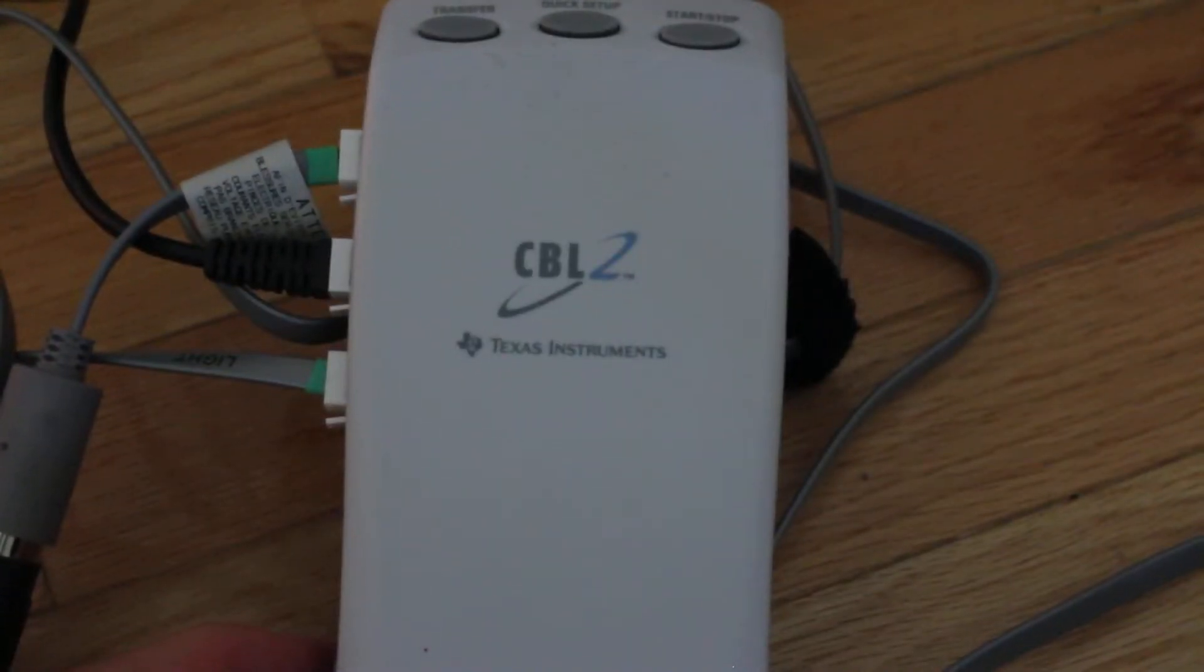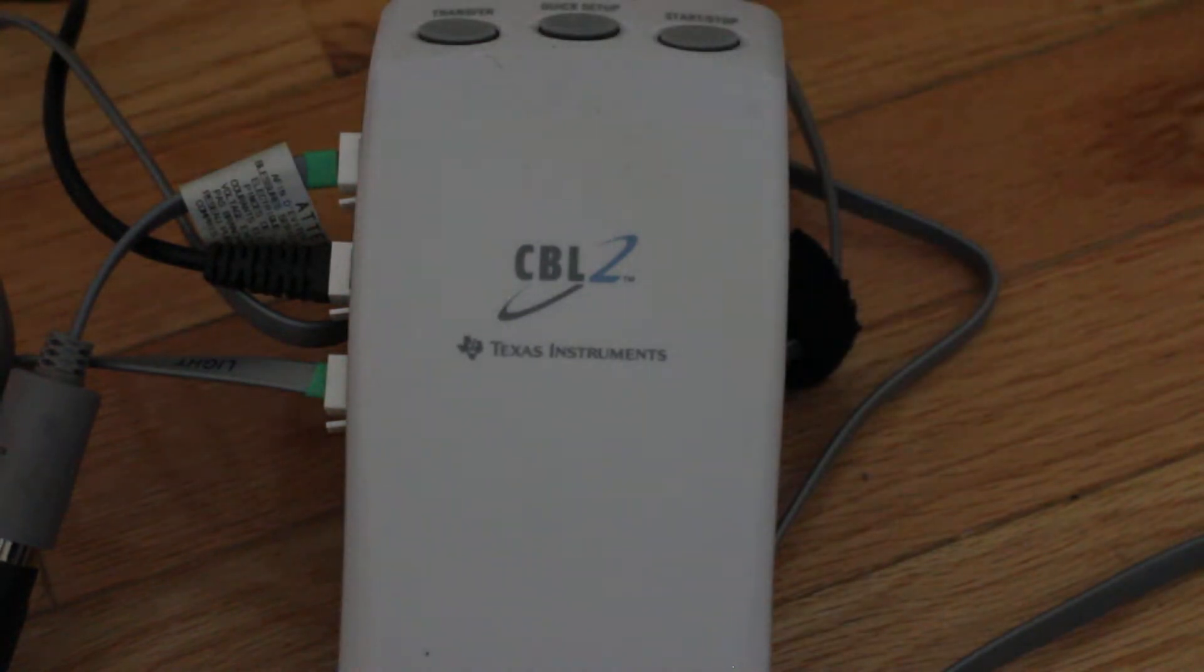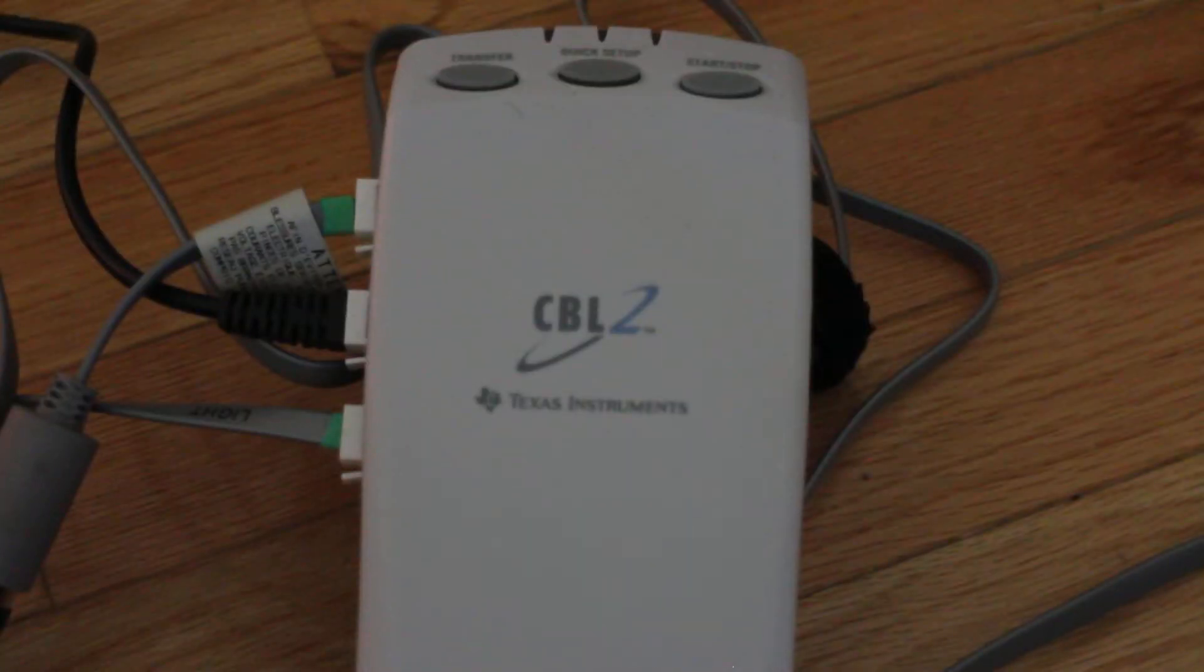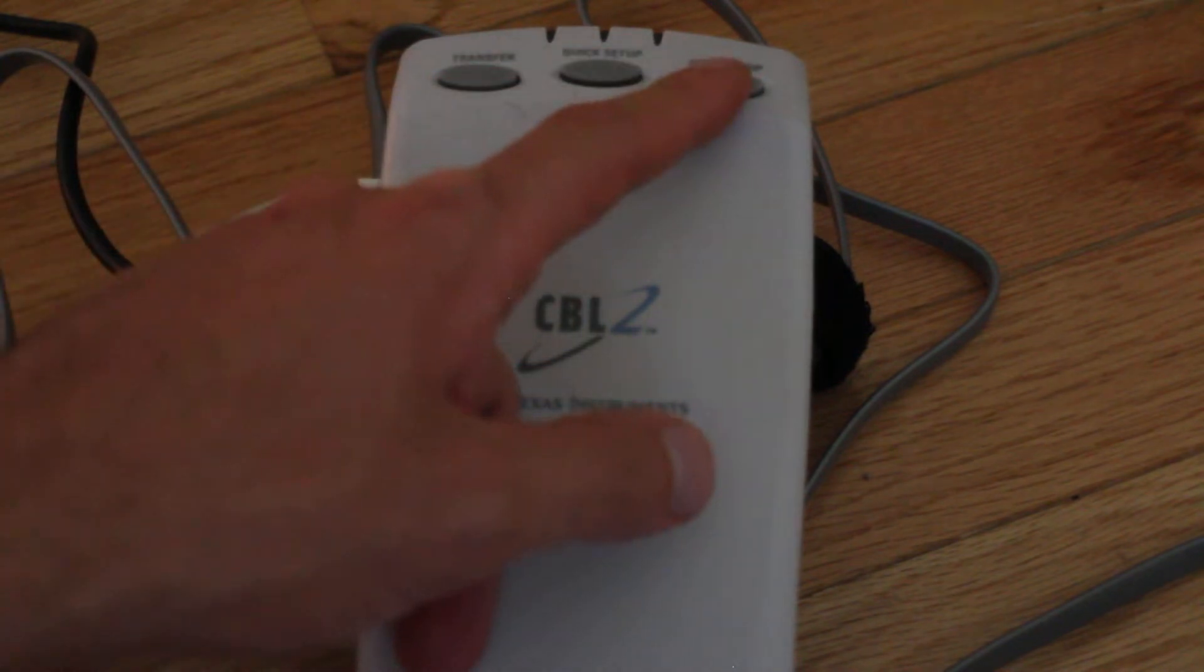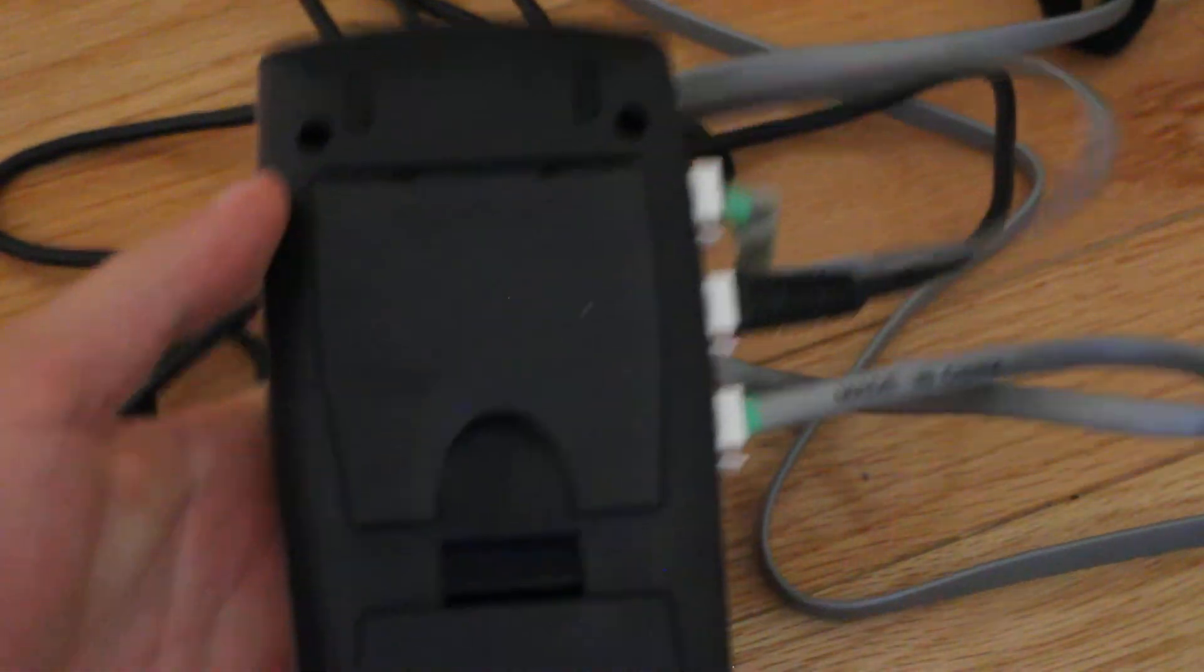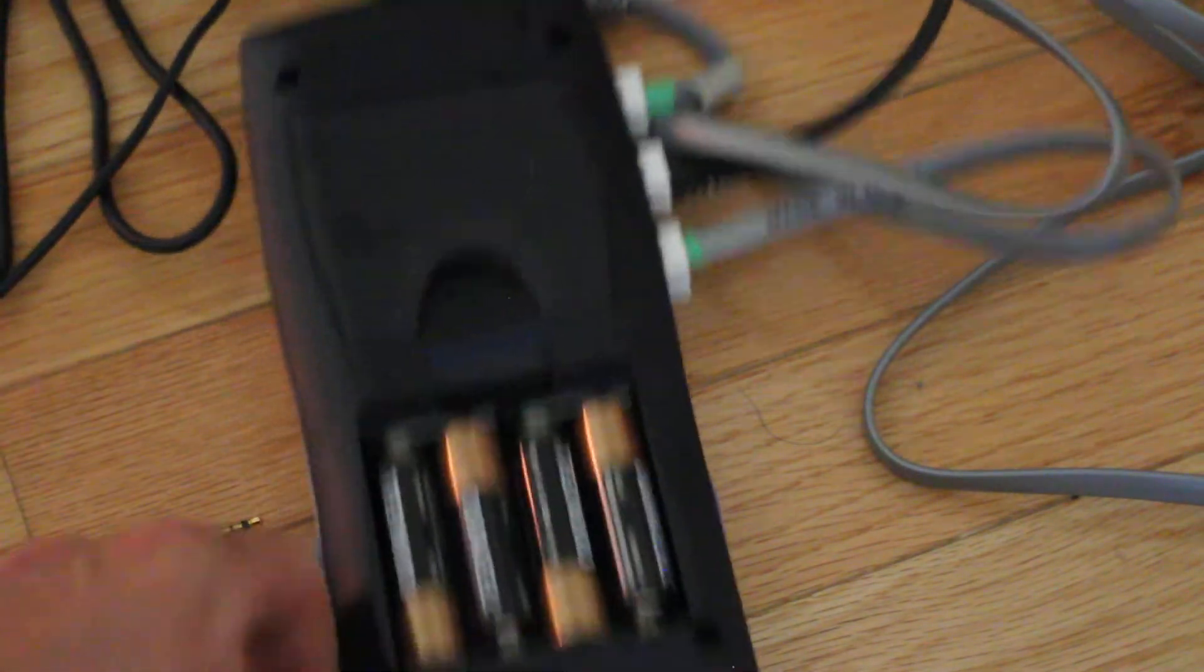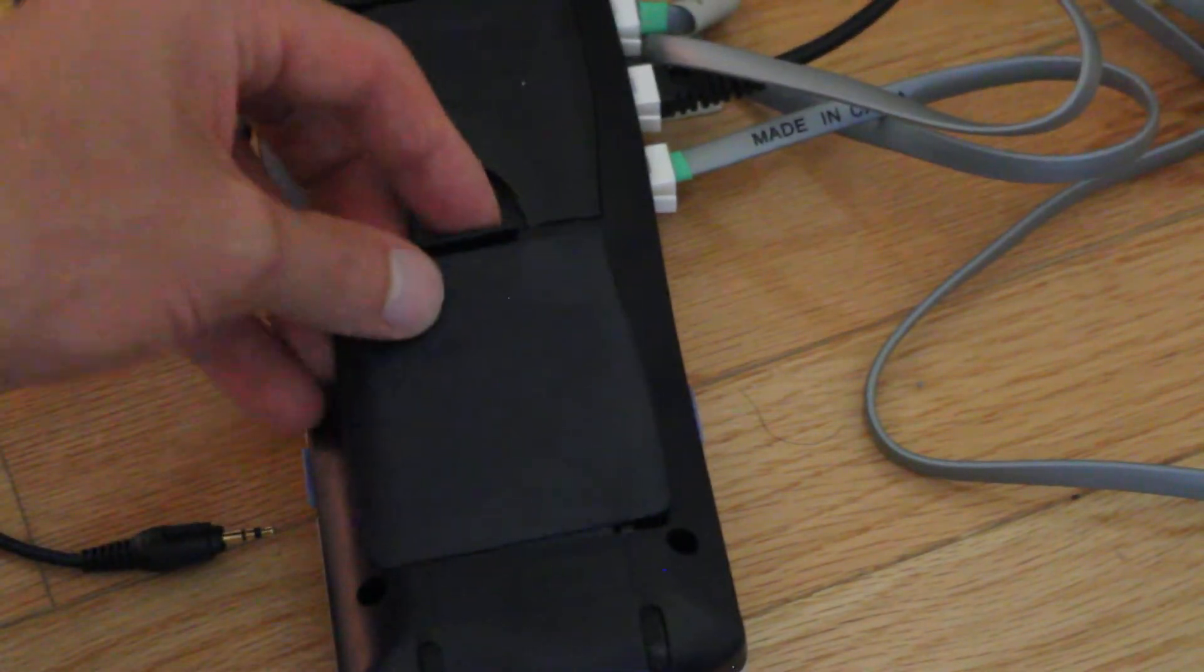You don't use the CBL-2 by itself. What it does is it will install a program called DataMate which you can then use to acquire and visualize data. On top there's a transfer quick setup and then start stop button. A little foot on the back side of it here. And this thing needs four AA batteries to run. Very, very easy.